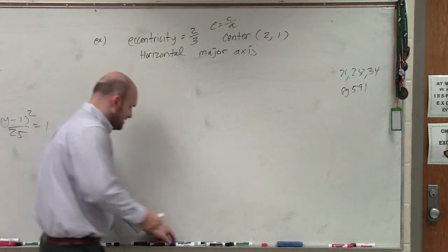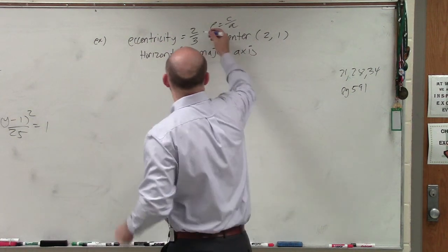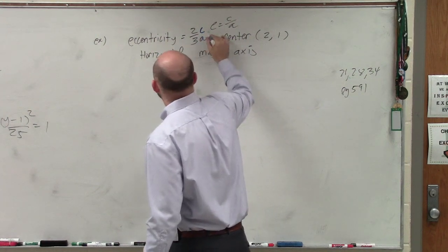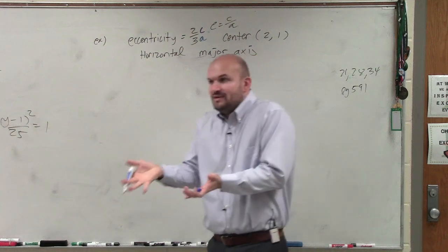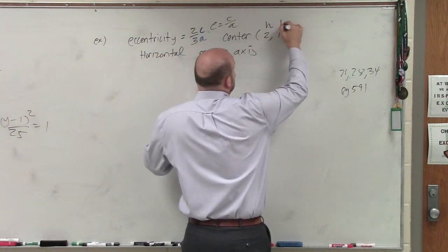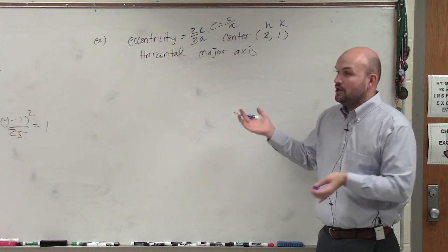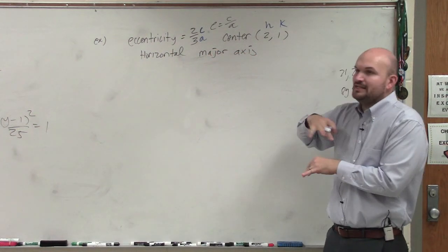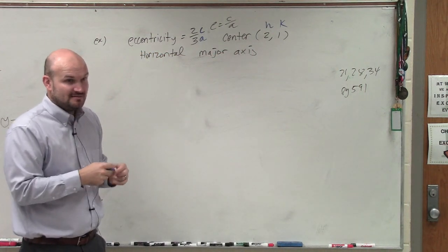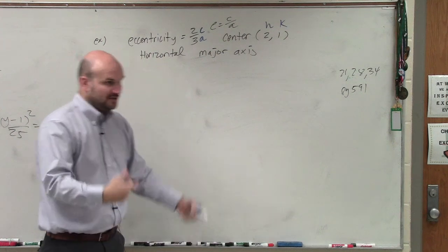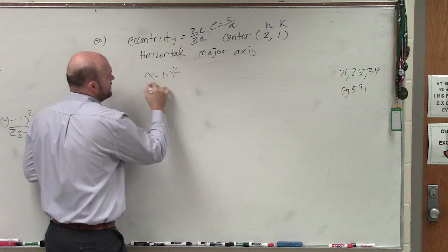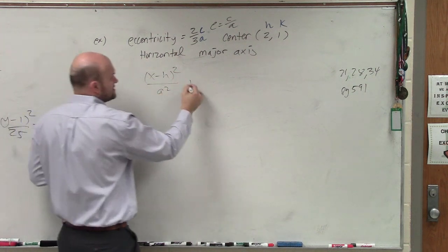So that's nice, because I now know 2 is C and 3 is A. To write an equation, all we need is the center, which they already gave us. And we need to know A, B, and the center. We also need to know where our major axis is, which they tell us — it's a horizontal major axis. They're just giving us all the information. So we know our formula is going to be x minus h squared all over A squared, because this one has a horizontal major axis.